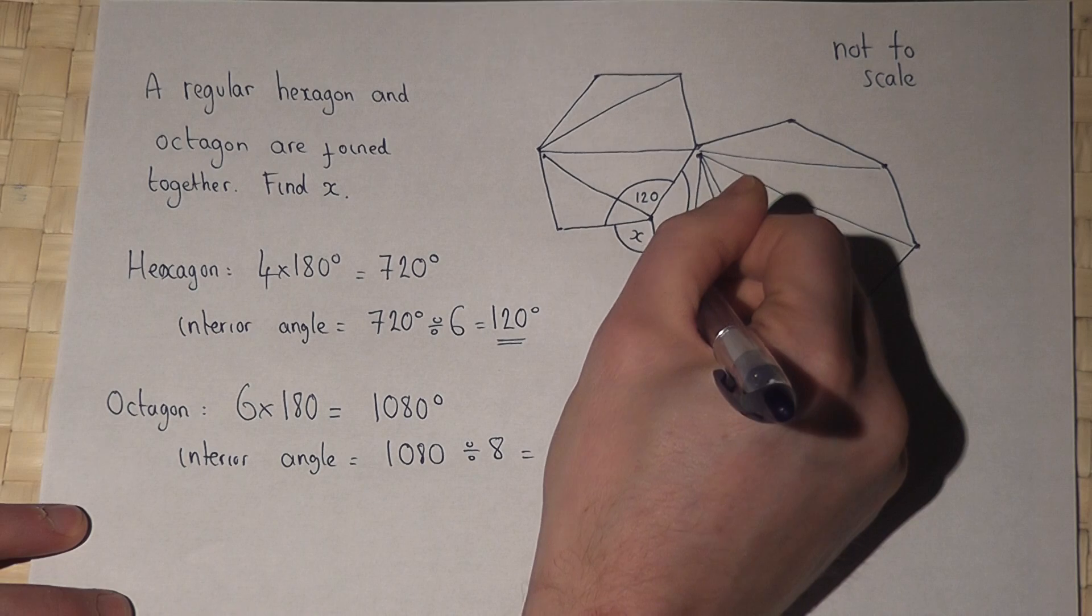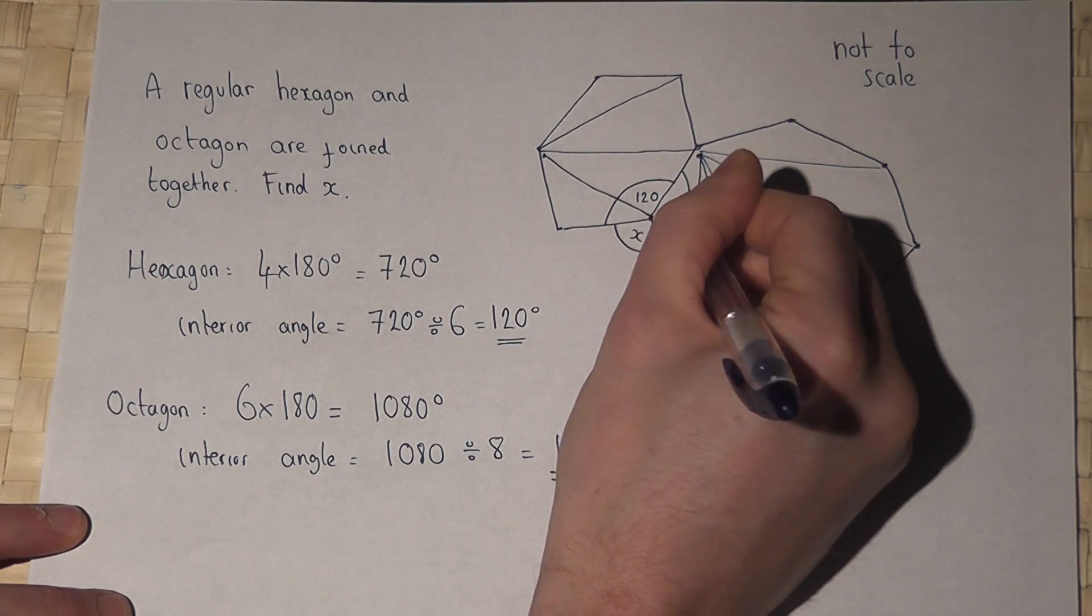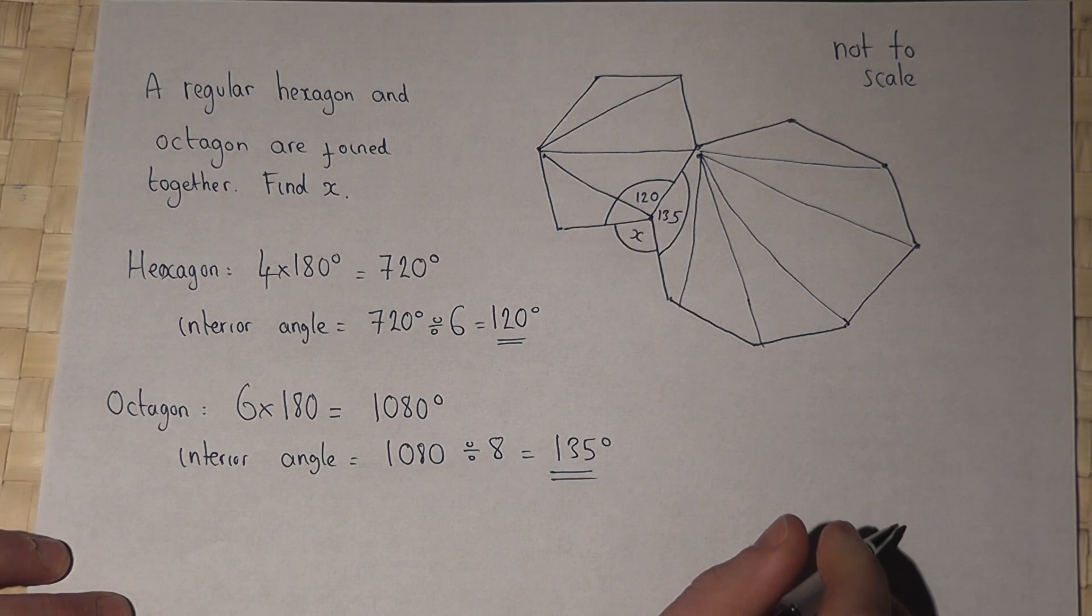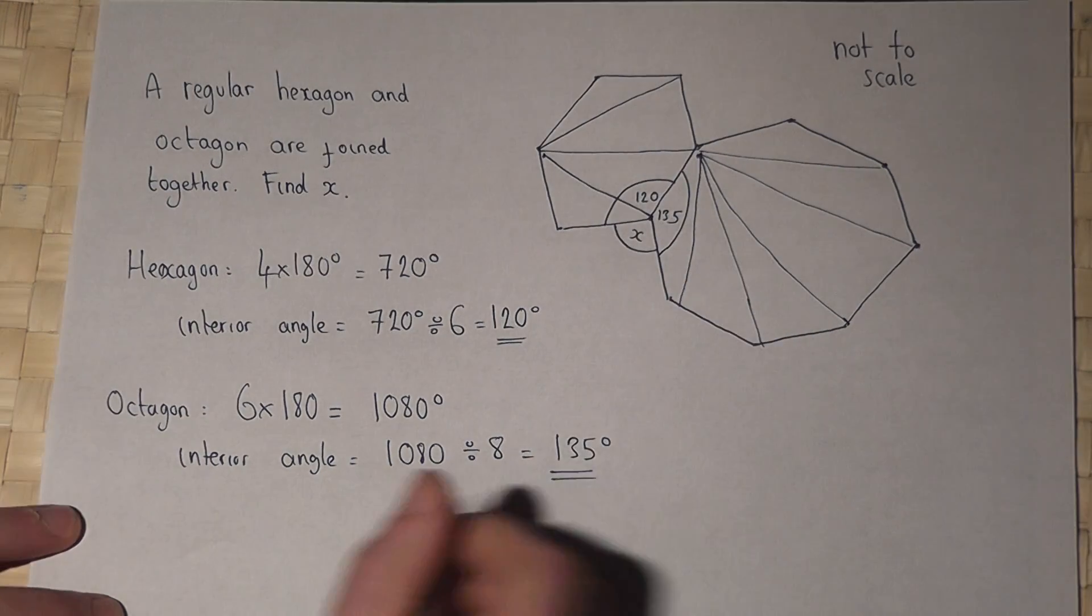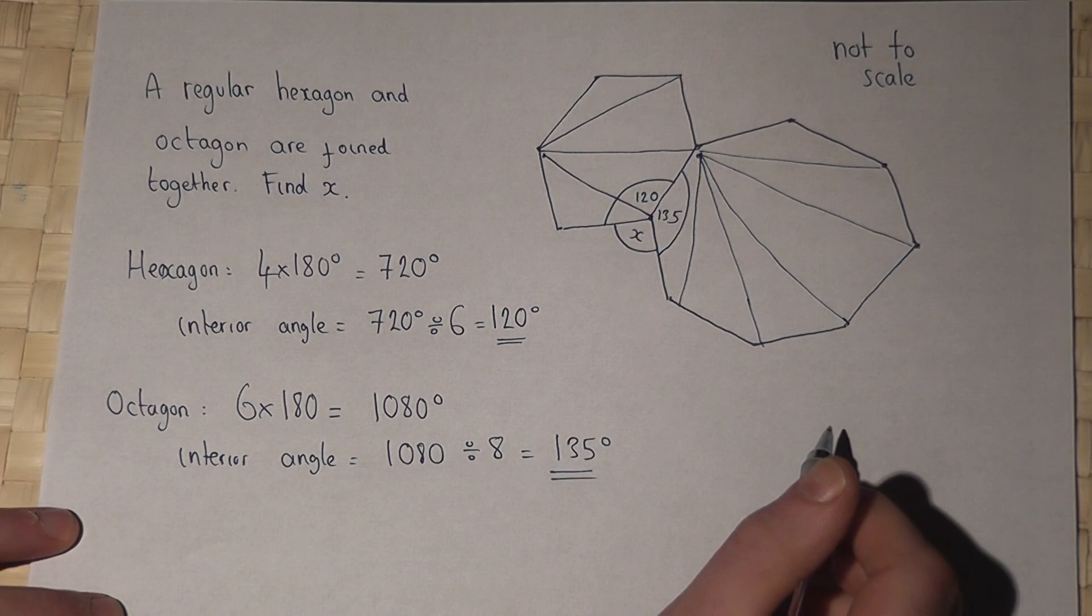So therefore, that angle must be 135. Now, because those angles there form a circle, then they must add to 360 degrees.